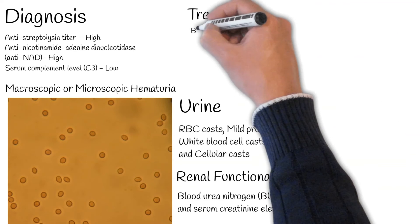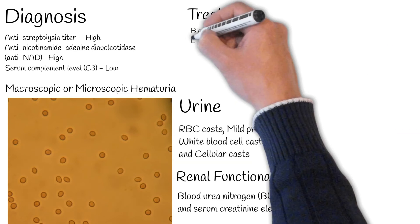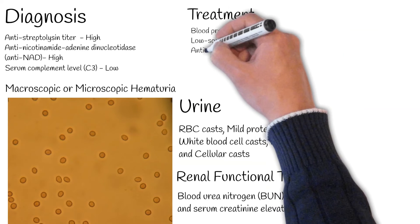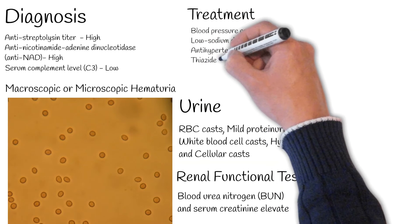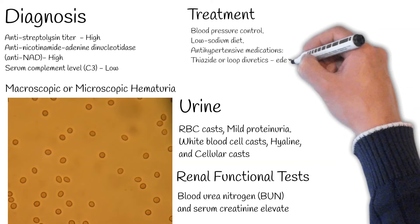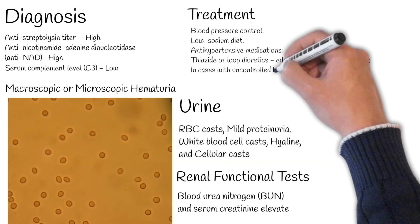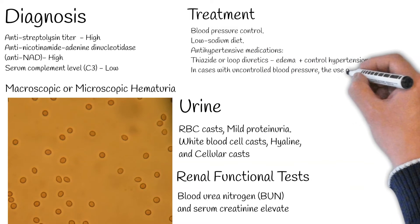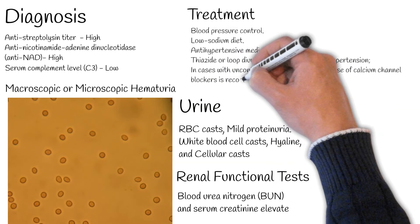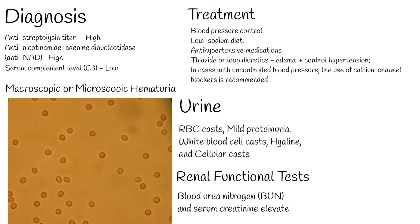Treatment: Acute management of acute proliferative glomerulonephritis mainly consists of blood pressure control. A low-sodium diet may be helpful. In individuals with oliguric acute kidney injury, potassium levels should be controlled. Thiazide or loop diuretics can be used to simultaneously reduce edema and control hypertension. In cases with uncontrolled blood pressure, the use of calcium channel blockers is recommended.